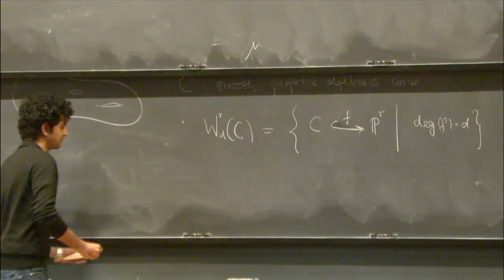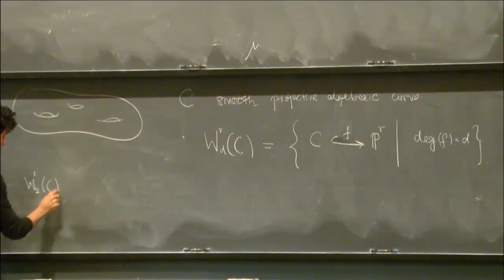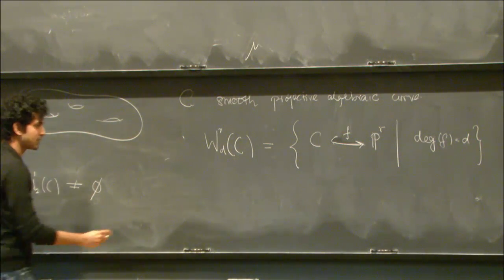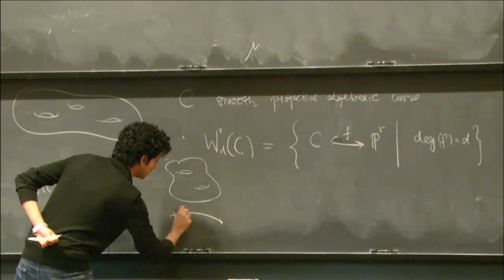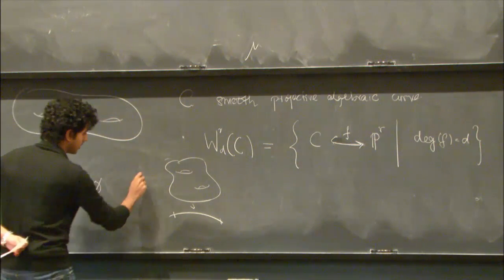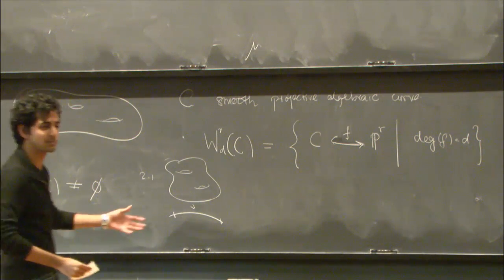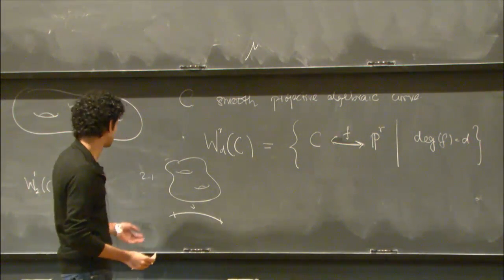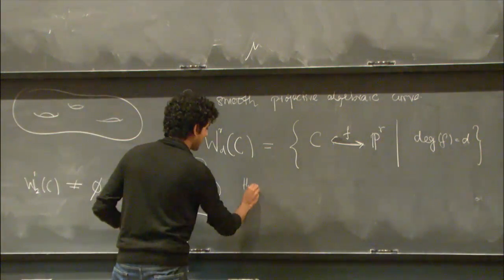It's been known for a long time that these varieties are important. A lot of classical theorems are phrased in this language. For instance, W1,2g on an algebraic curve, if this is non-empty, that's just the statement that your algebraic curve arises as a double cover of P1. These are, in some sense, the simplest ramified double covers of P1, the simplest algebraic curves of genus g. They're very close to being rational. These are called the hyperelliptic curves. We know lots of things about hyperelliptic curves; in particular, we can write down equations for them pretty explicitly.